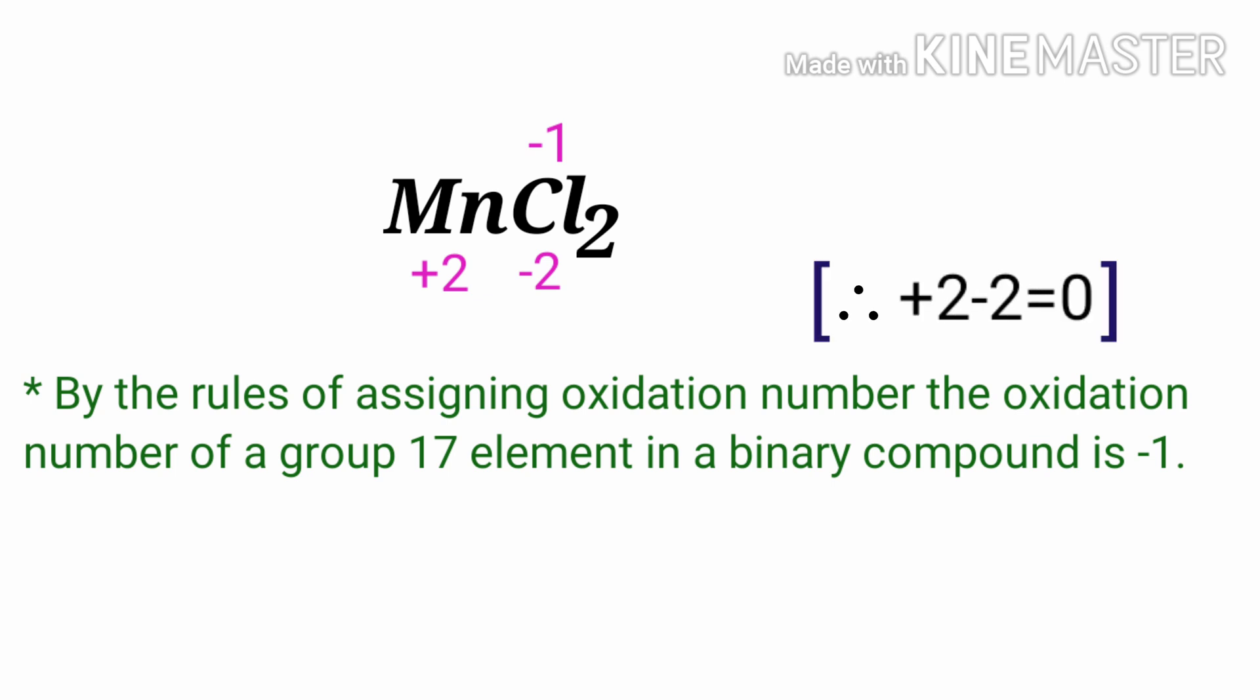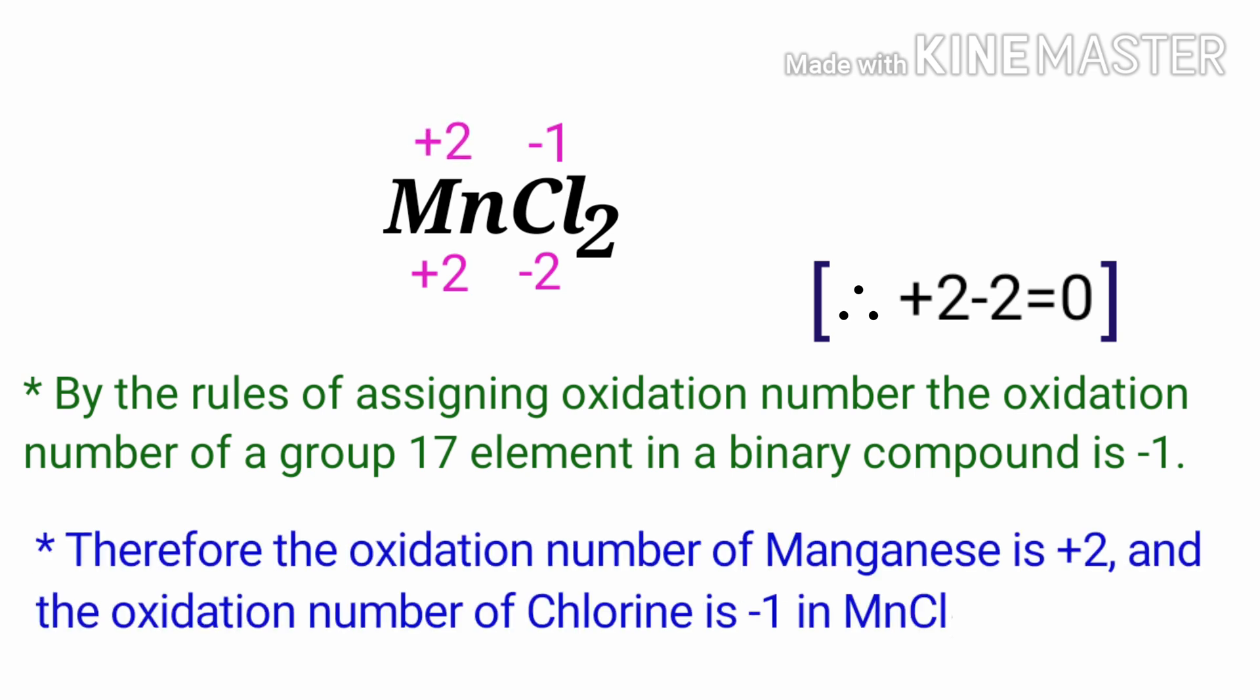The oxidation number of manganese is plus two. Therefore, the oxidation number of manganese is plus two and the oxidation number of chlorine is minus one in manganese dichloride.